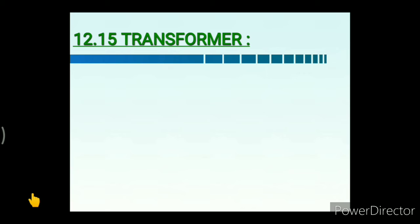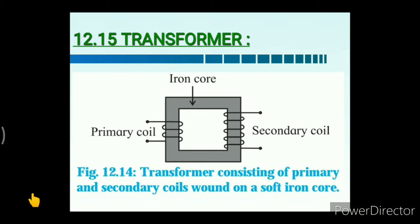Mutual inductance is the basis of all types of transformers. A transformer is a device used for changing the voltage of alternating current from low to high or vice versa. The transformer works on the principle of mutual induction: whenever the magnetic flux linked with the coil changes, an EMF is induced in the neighboring coil.